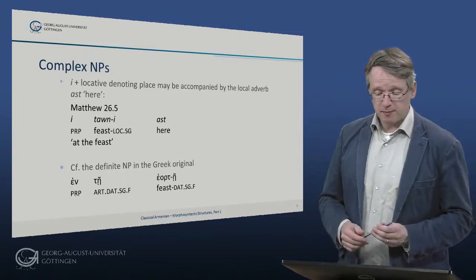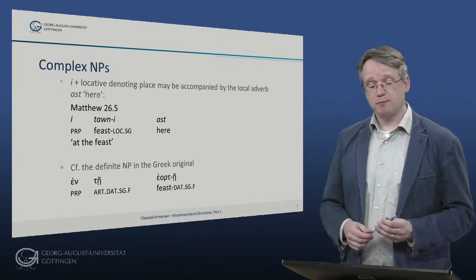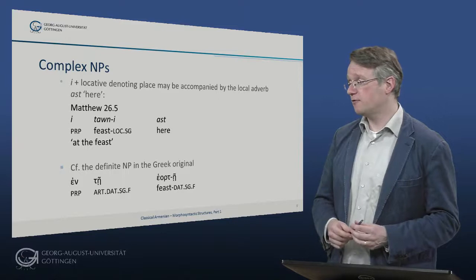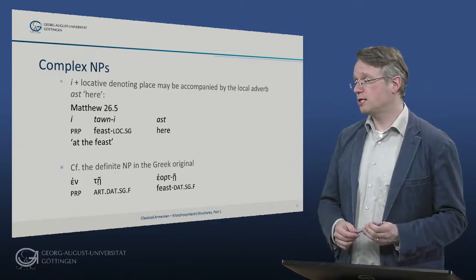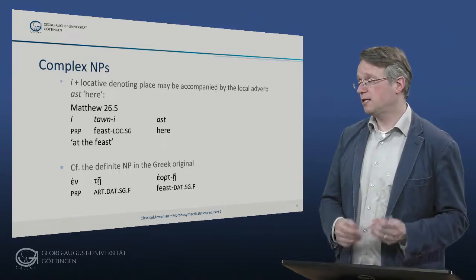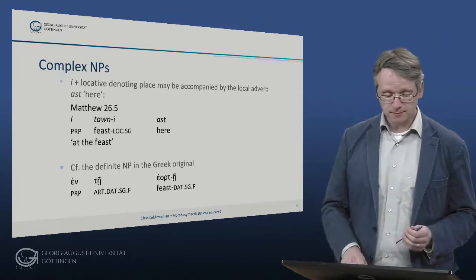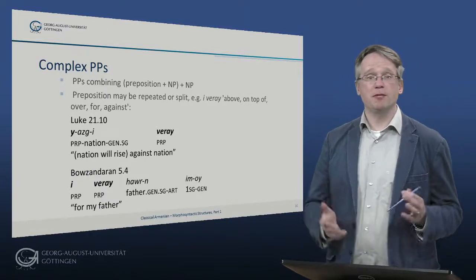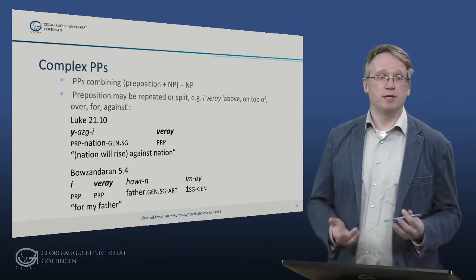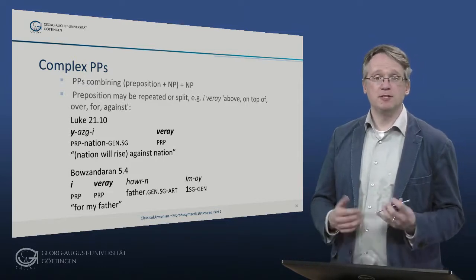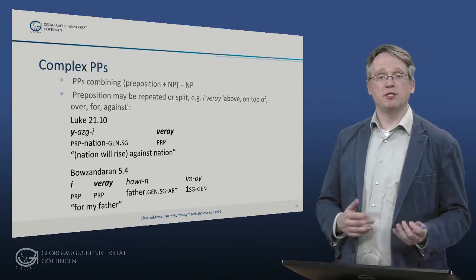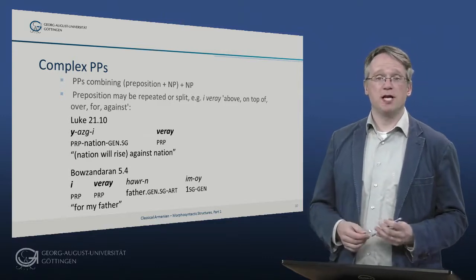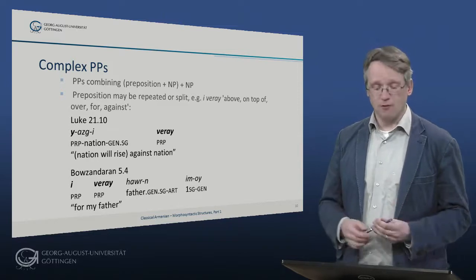I plus locative, denoting place, may be accompanied in parallel fashion by the local adverb ast, meaning 'here'. So this is Matthew 26:5, eitoni ast — so at the feast — once more the same feature that we've already seen, and Greek has a simple definite NP here, en te heorte. With prepositional phrases originating from the combination of a preposition and a noun — so this is the type of English 'on top of' — these usually retain the adnominal genitive. The preposition and its dependent noun may be split, however, and partly repeated.